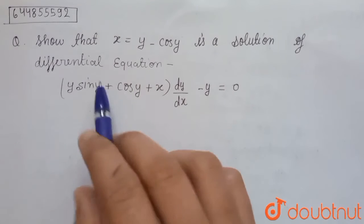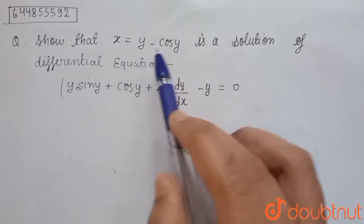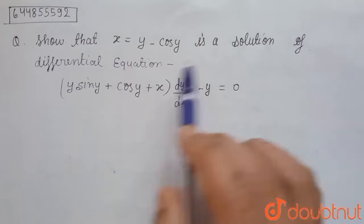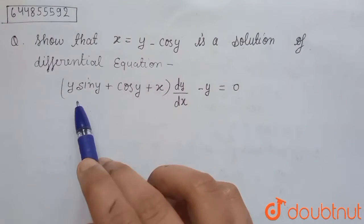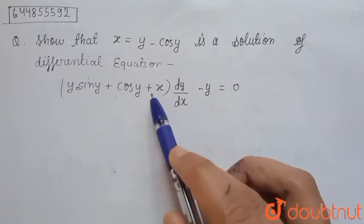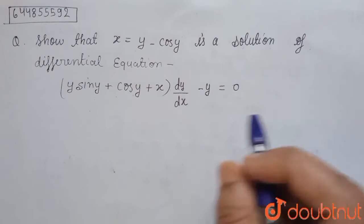Hello, question is show that x equals to y minus cos y is a solution of the differential equation y sin y plus cos y plus x dy upon dx minus y equals to 0.